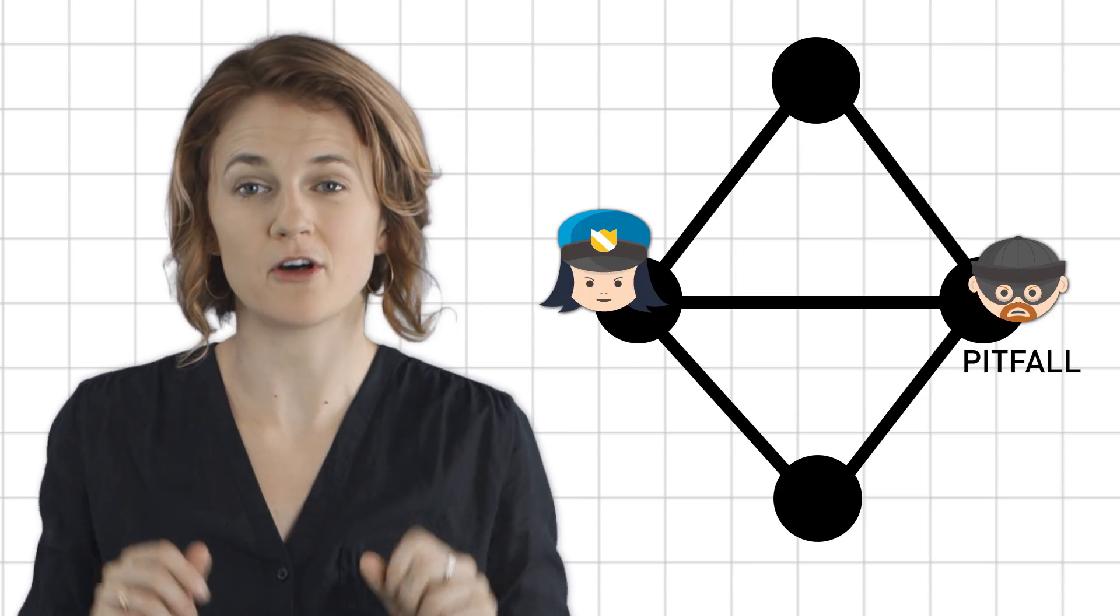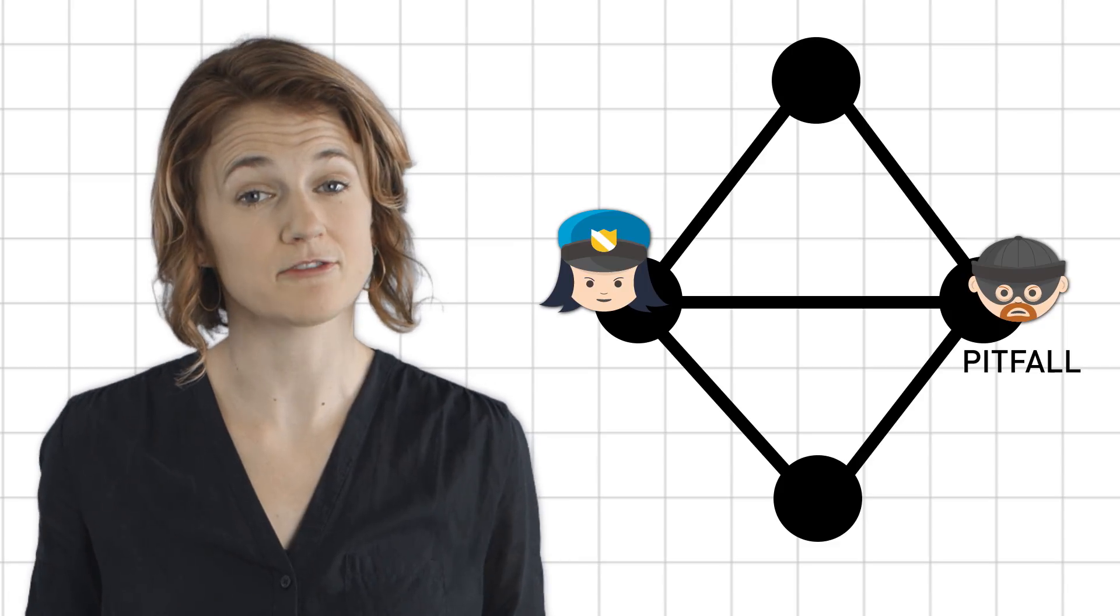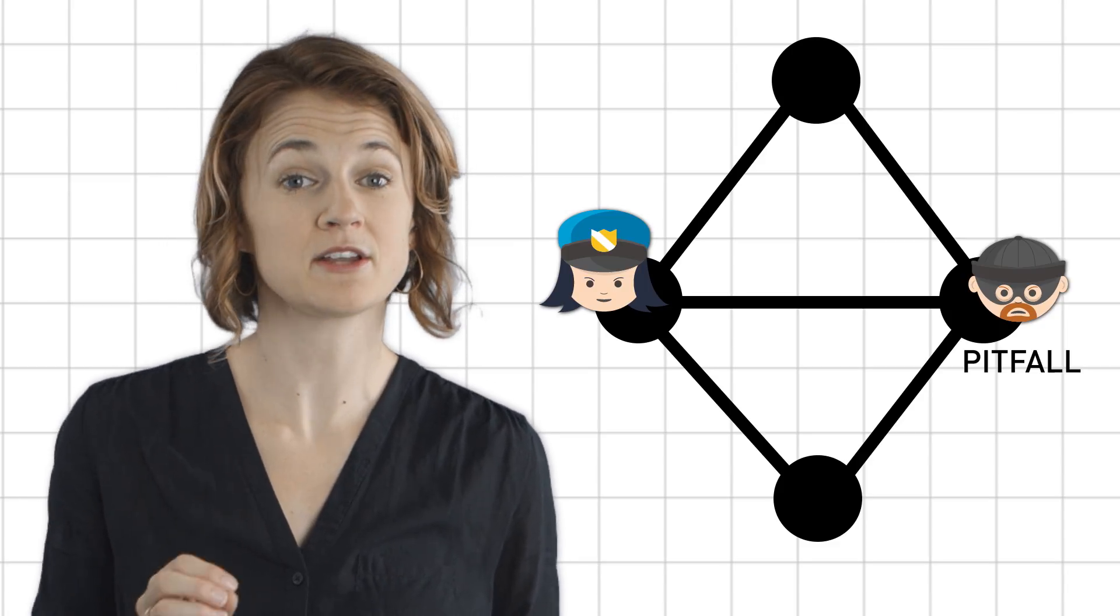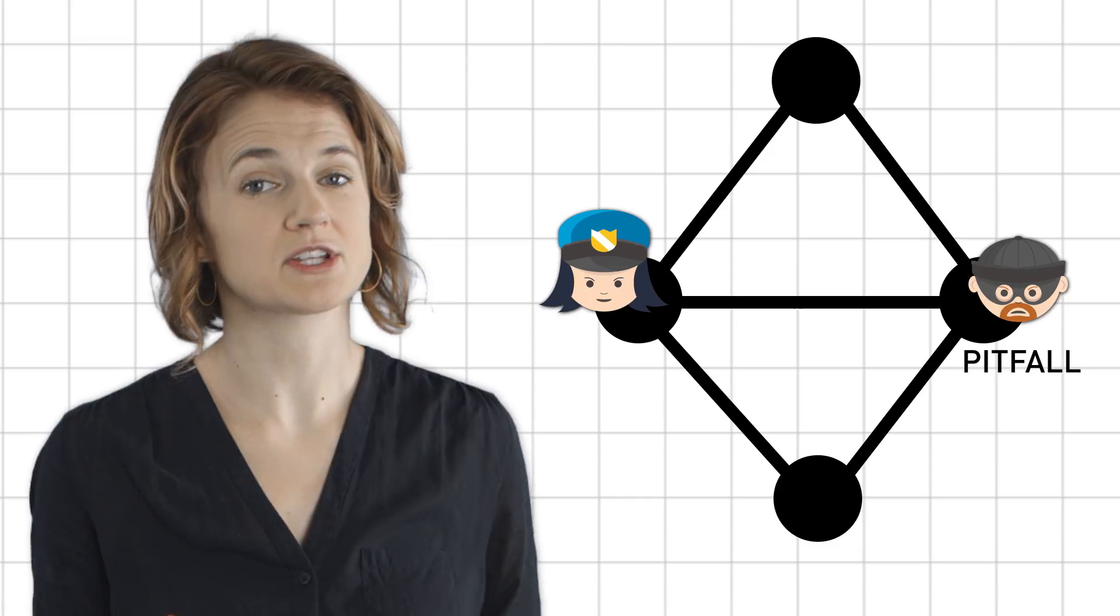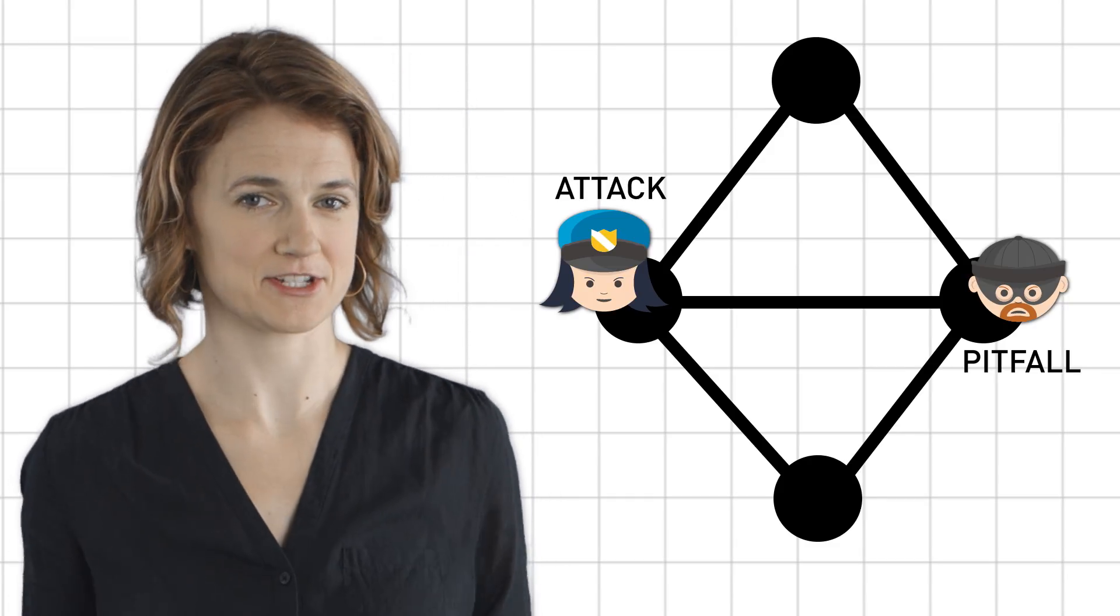The robber would like to avoid being in such a position. Formally, we'll define a pitfall to be a vertex whose neighborhood, including the vertex itself, is entirely covered by another vertex. That other vertex is attacking the pitfall, so we'll call it the attack vertex. In other words, the cop is automatically going to win if the robber's vertex is a pitfall.